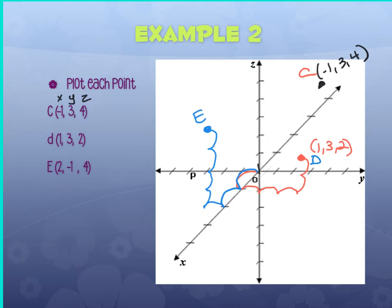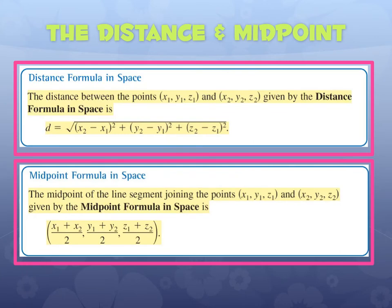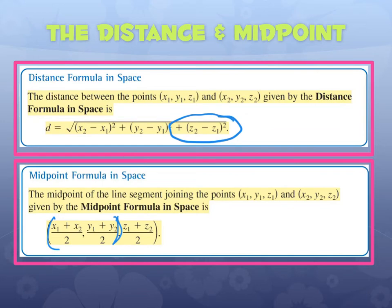Plotting points is honestly the hardest part of this lesson because it's a bit abstract. When graphing by hand, use little 'scoops' to show how many places you moved. Now, for the easy part — distance and midpoint. You already know these formulas; we're just adding a third part. Distance becomes the square root of (x₂−x₁)² + (y₂−y₁)² + (z₂−z₁)². Midpoint becomes ((x₁+x₂)/2, (y₁+y₂)/2, (z₁+z₂)/2).